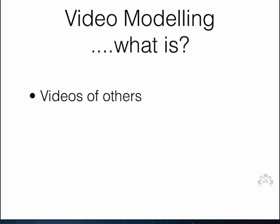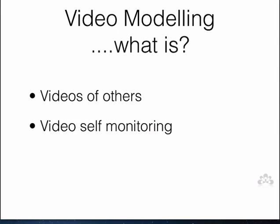There are three different types of video modeling. The first is where you take a video of another person as the model. This can be easier to produce because you might use a peer who is able to display the desirable skill more easily, making the video creation more straightforward. The second is video self-monitoring, where the video is actually of the person doing the desired skill. This may be harder to capture but might be more effective depending on who you're working with, as some people need to see themselves featured in the video for it to be meaningful.